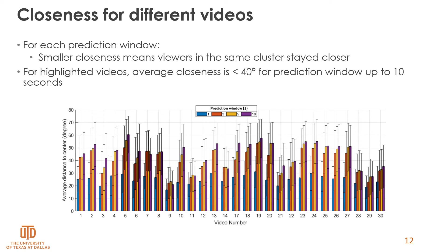Here we see the results of closeness for all videos, including measurements for clusters of size three or more. For prediction window equal to one second, the average closeness is not greater than 30 degrees, implying that viewports still have high overlap after one second. Depending on the video category, the closeness differs. For videos with a strong region of interest — for example, video 9, with only one moving object — the closeness value is lower. For field of view equal to 100 degrees, if viewports are less than 40 degrees apart, they will have about 60% overlap. So for videos with lower closeness value, we can use the clustering-based solution for prediction.